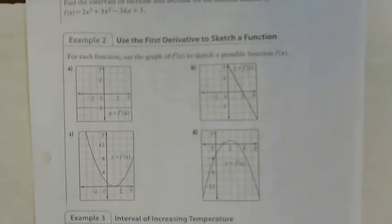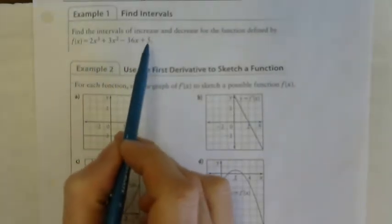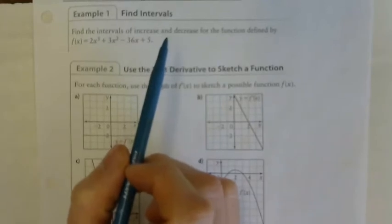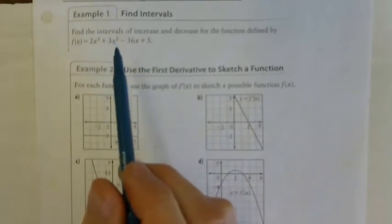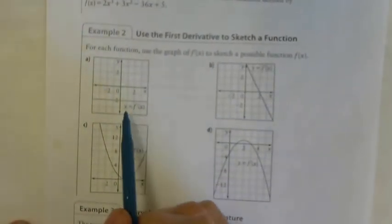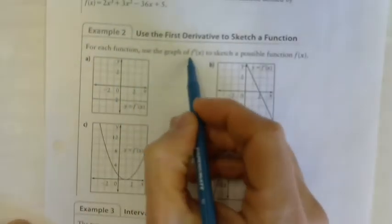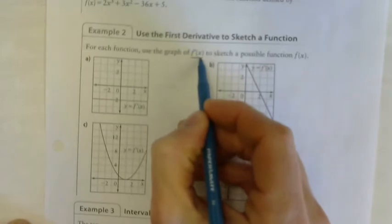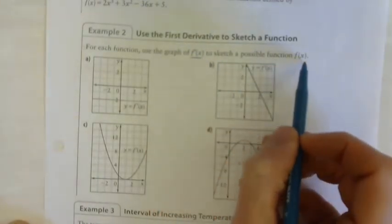Example two: we're going to use the derivative differently. In example one we had an original equation, found its derivative, and sketched the original. Now we're given the graph of f prime of x — the derivative — and we need to sketch a possible function f of x.